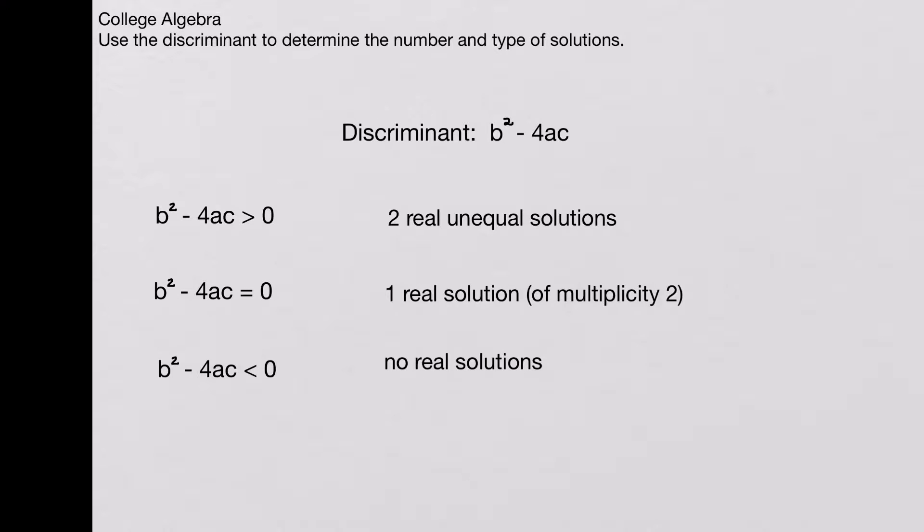The discriminant of a quadratic equation is the part of the quadratic formula that is under the radical, and because it's under a radical, that tells us something about the types of solutions and how many solutions we'll get.